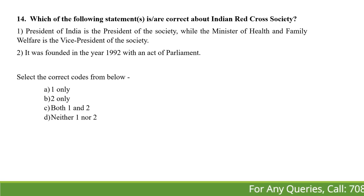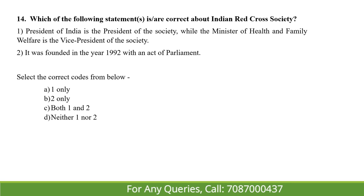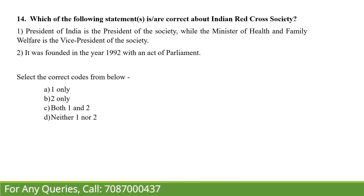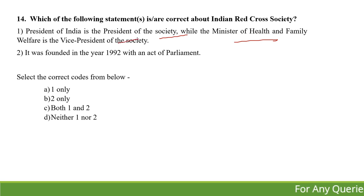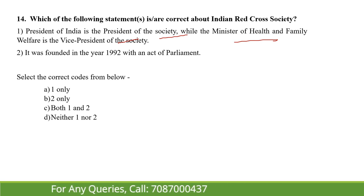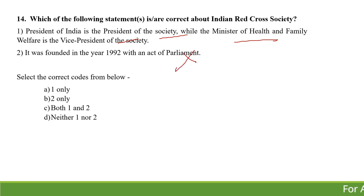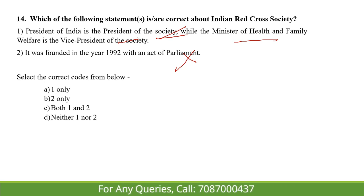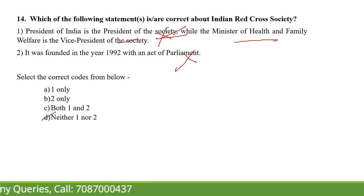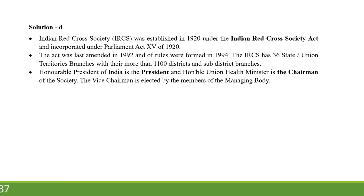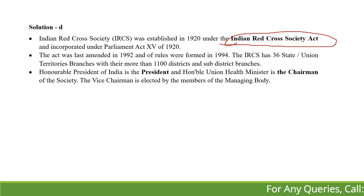Which of the following statements are correct about the Indian Red Cross Society? We are covering this because it has been 100 years of the Red Cross Society. First, the President of India is the President of the Society while the Minister of Health and Family Welfare is the Vice President of the Society. Second, it was founded in 1992 with an Act of Parliament. Both statements are incorrect. Although the President of India is the President of the Red Cross Society, the Health and Family Welfare Minister is the Chairman of the Society — not the Vice President. The founding year is also wrong — the Indian Red Cross Society was established in 1920 under the Indian Red Cross Society Act, incorporated under Parliament Act 15 of 1920.